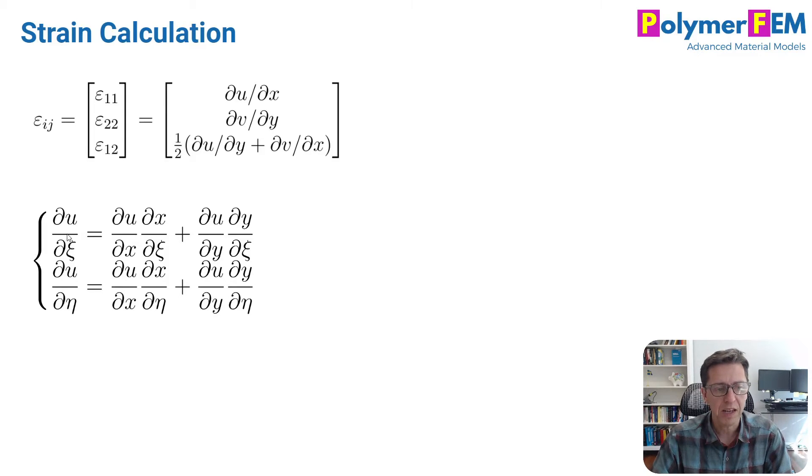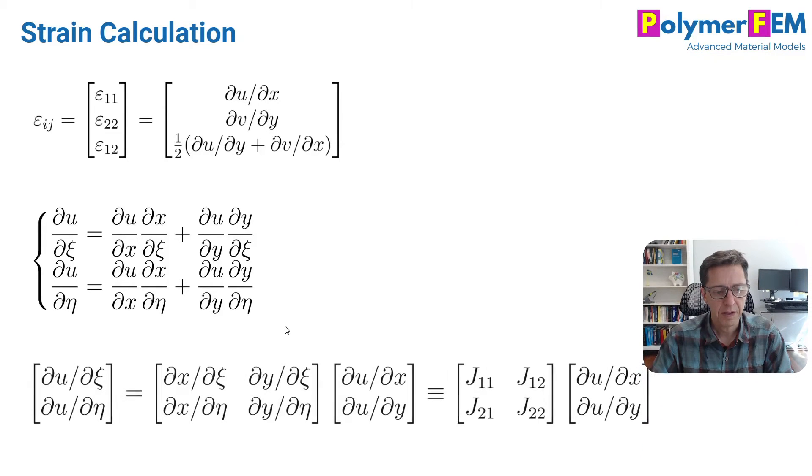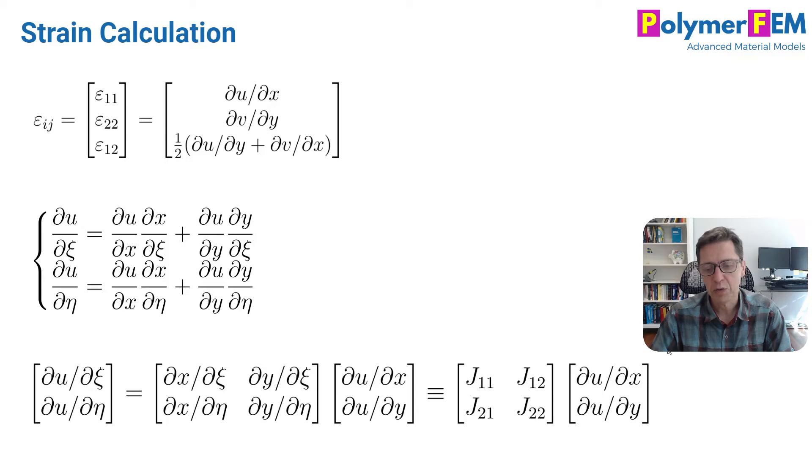And due to the chain rule, I can expand these partial derivatives in this way. So the ∂u/∂x, ∂u/∂eta and so forth, as you can see here. And at the bottom, you can see another way to write it. So this is a matrix formulation that shows the same information. This is the partial derivative that we're looking at here. And it can be calculated from this matrix here.